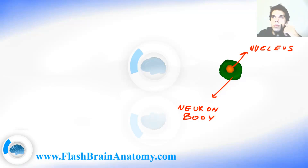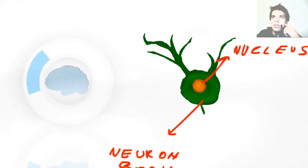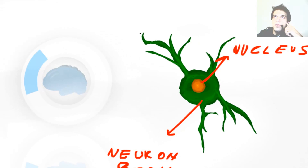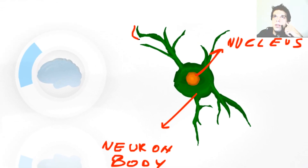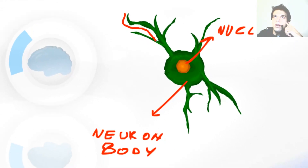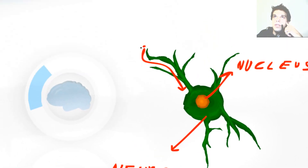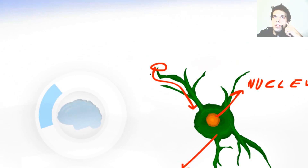Dendrites are protoplasm extensions of the cell body. They are supposed to receive the signal and conduct it towards the cell body. The place where they receive the signal is called the synapse. To learn about the synapses, please watch the next video.